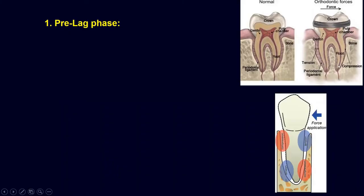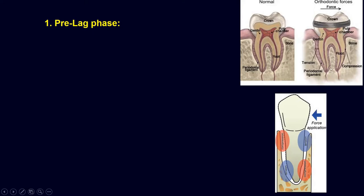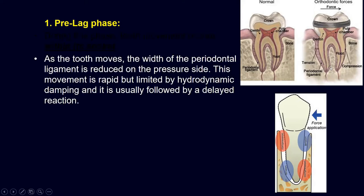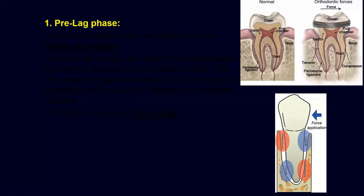The average thickness of the PDL is around 0.5 mm. So the tooth moves within the space of the PDL and is slightly extruded as well. This movement within the PDL space is basically the pre-lag phase. When the tooth comes into contact with the lamina dura, this movement stops. This occurs within the first one to three days.